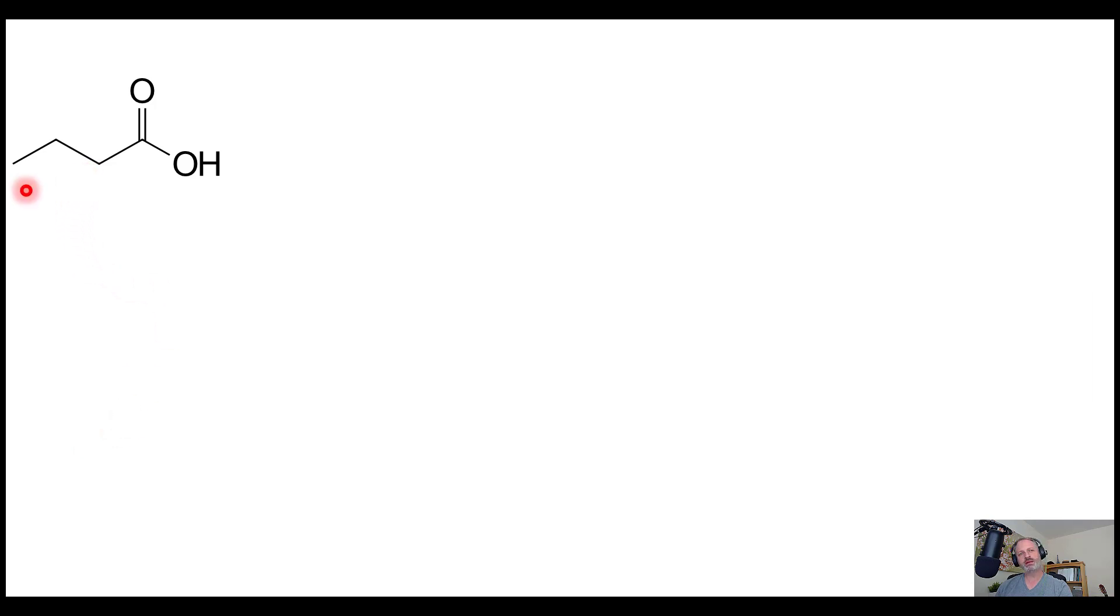I want to look at how we can make this molecule using the malonic ester synthesis. The first thing we have to recognize is that that's a possible route to make this molecule. We can see that this part that I've circled here is really an acetic acid part of our molecule.